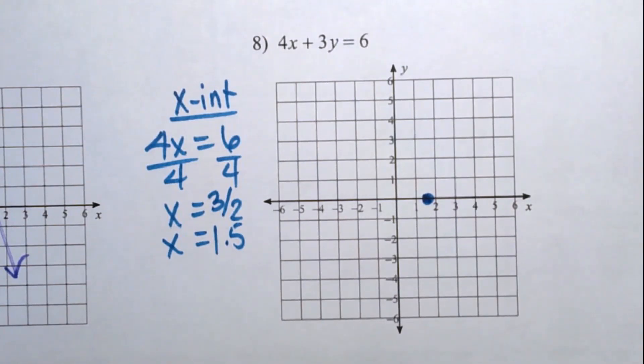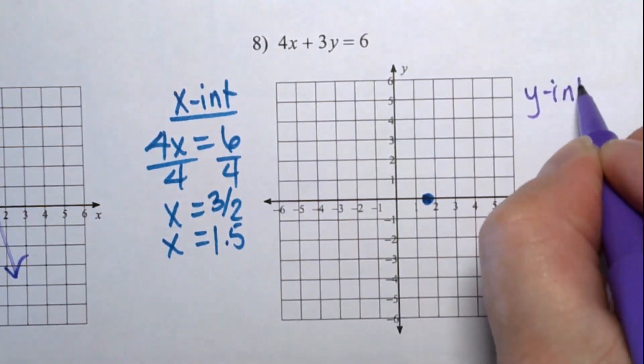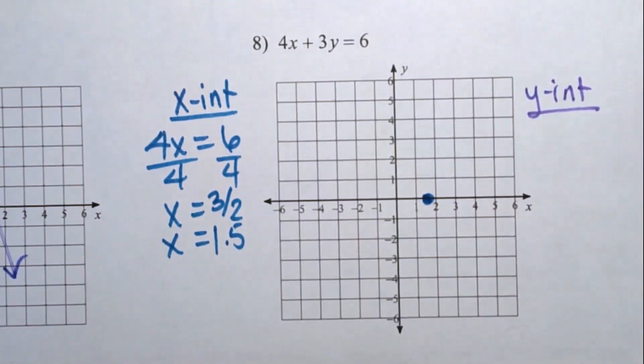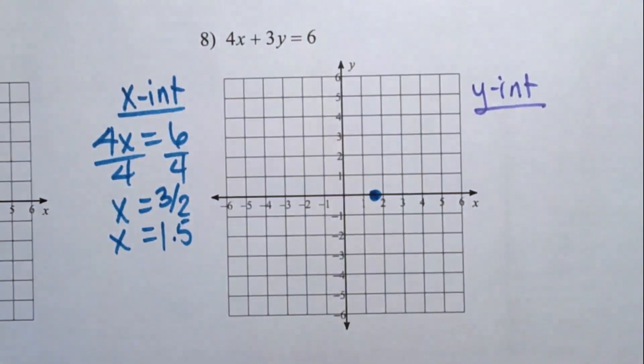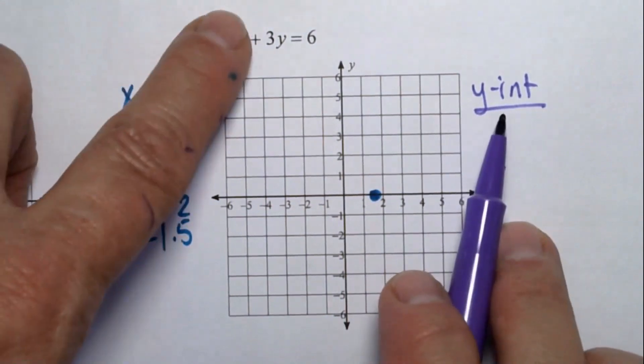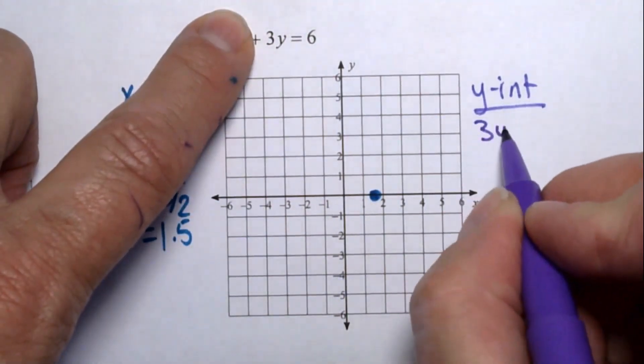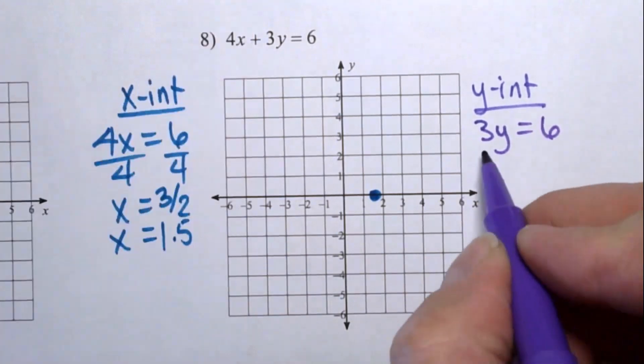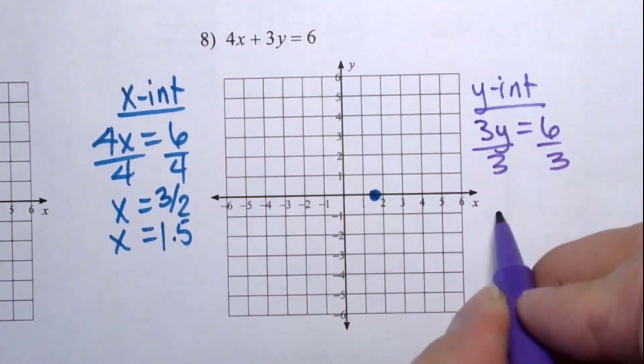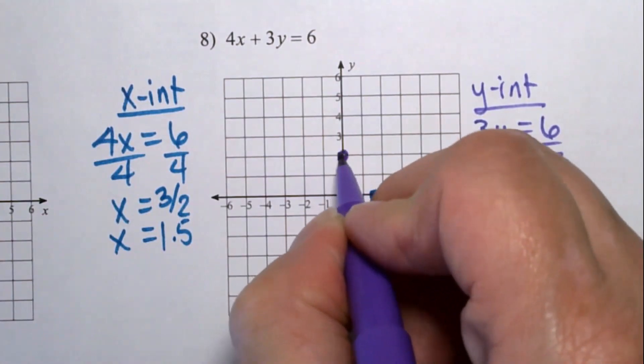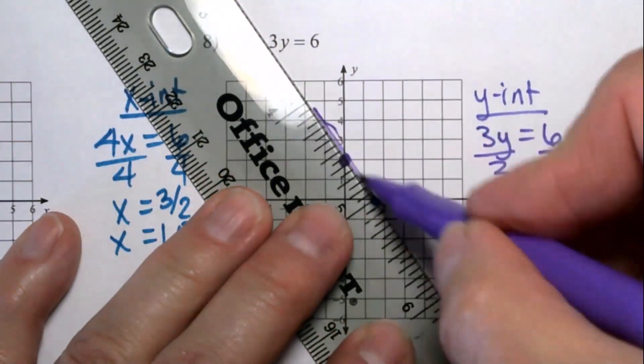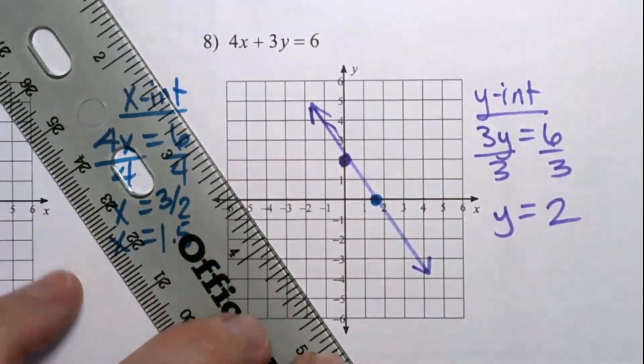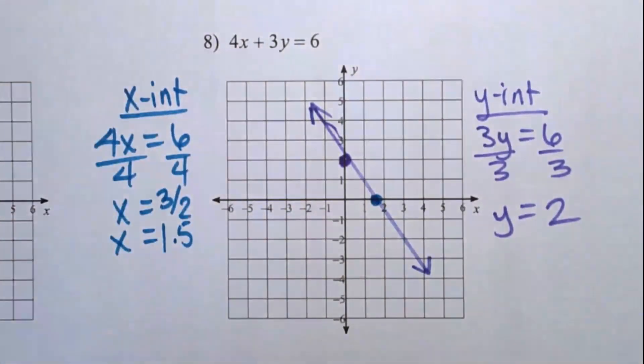All right, to get the y-intercept, we want to keep the y, lose the x, and write down what you see. 3y equals six. Solve that. Divide both sides by three. y equals positive two. That's where the dot goes. And draw the line. If I'm doing these too fast, pause. Slow me down. You can go backwards and watch it again, or just have me go really slow.